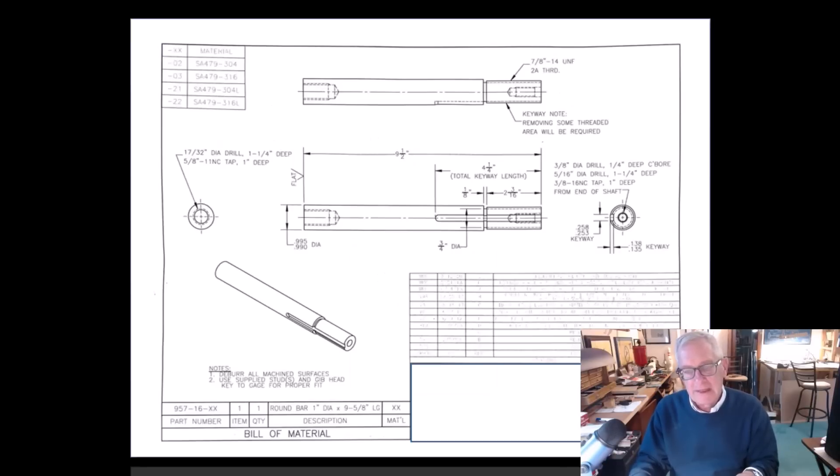So I've got this little drawing here, a very simple shaft, nine and a half inches long. For diameter, 990 to 995. It came out about 994 to me.